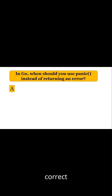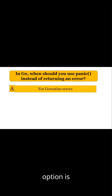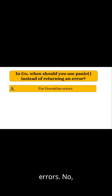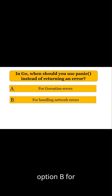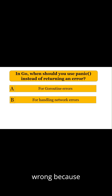The first option is goroutine errors. No — you should return errors via channels, not panic inside a goroutine. It's a bad practice. Option B is for handling network errors, which is also wrong because network errors are recoverable and should be returned, not panicked.